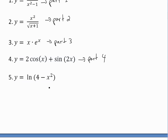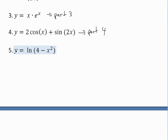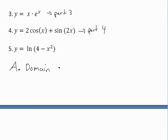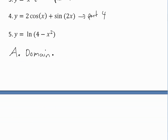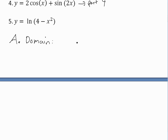Now let's look at example five: y equals ln(4 - x²). The first thing we do is look at part A of the guidelines — we look at domain. To see where y is defined for what x values, we have to look at how the graph of ln(x) looks.